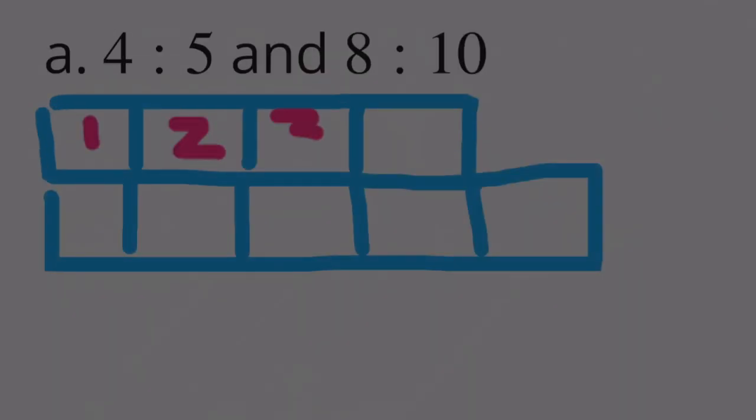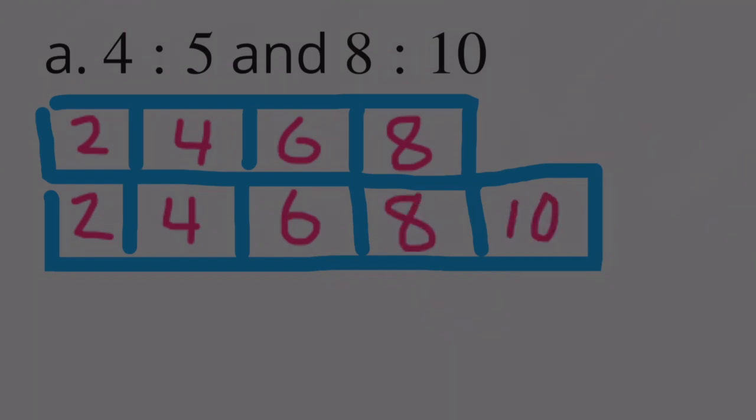Creating a diagram: 1, 2, 3, 4, then 2, 3, 4, then 4 to 5. Now 2, 4, 6, 8, 10. So this diagram worked for 4 to 5 and it also worked for 8 to 10, proving that 4 to 5 is the same ratio as 8 to 10.